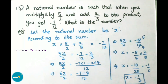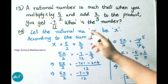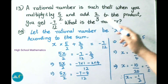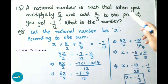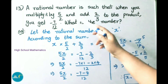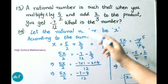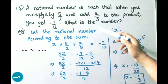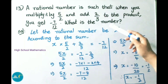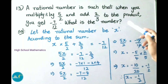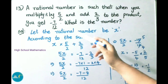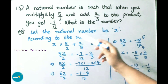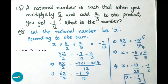See now question number 13. A rational number is such that when you multiply it by 5/2 and add 2/3 to the product, you get minus 7/12. What is the number?